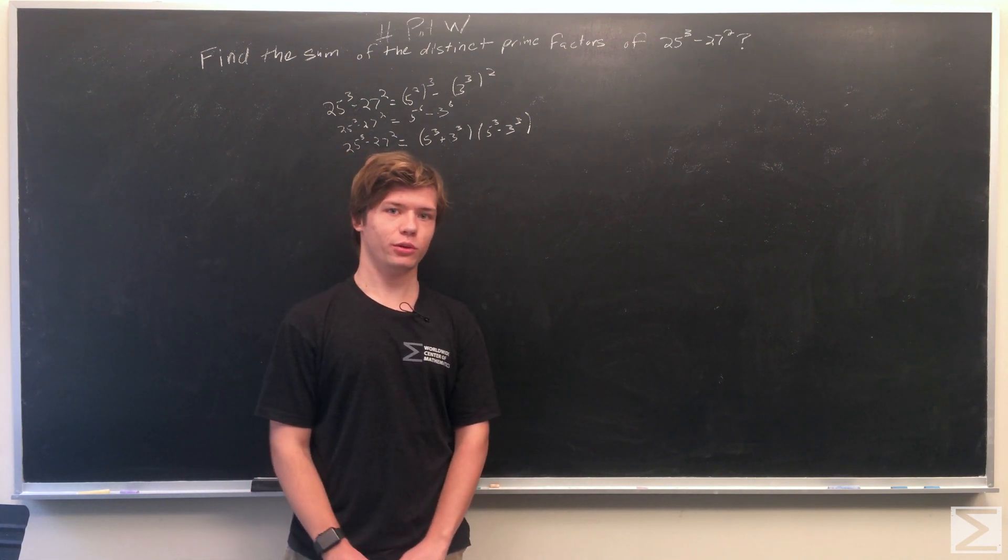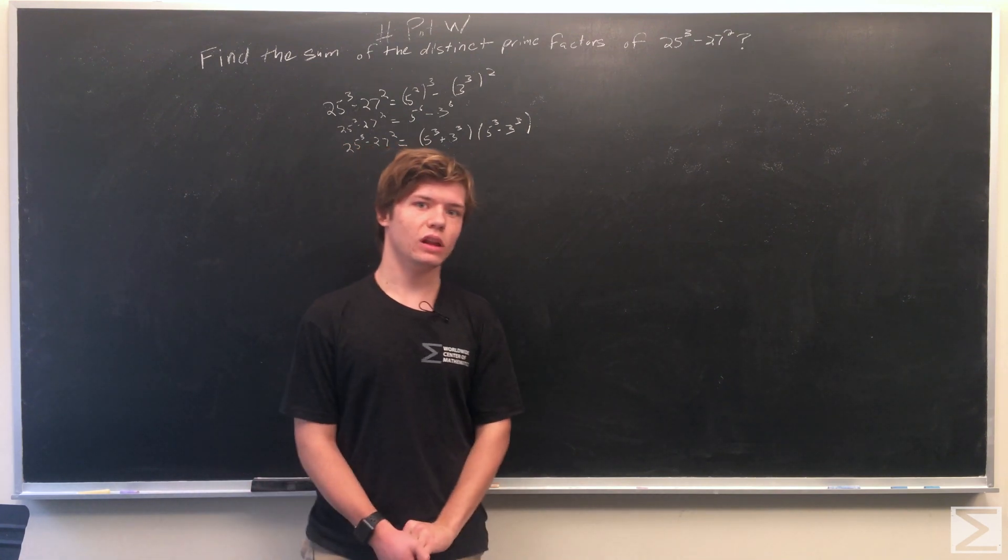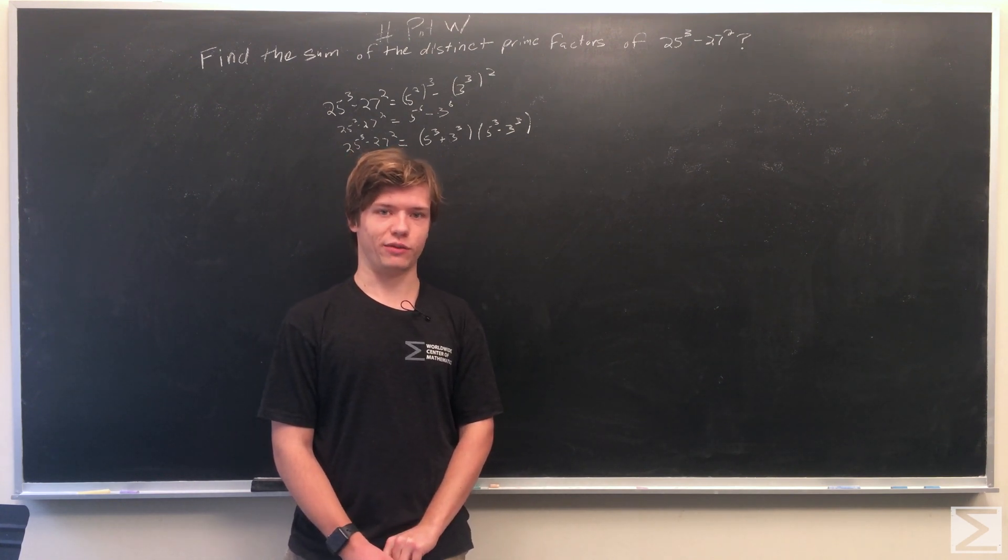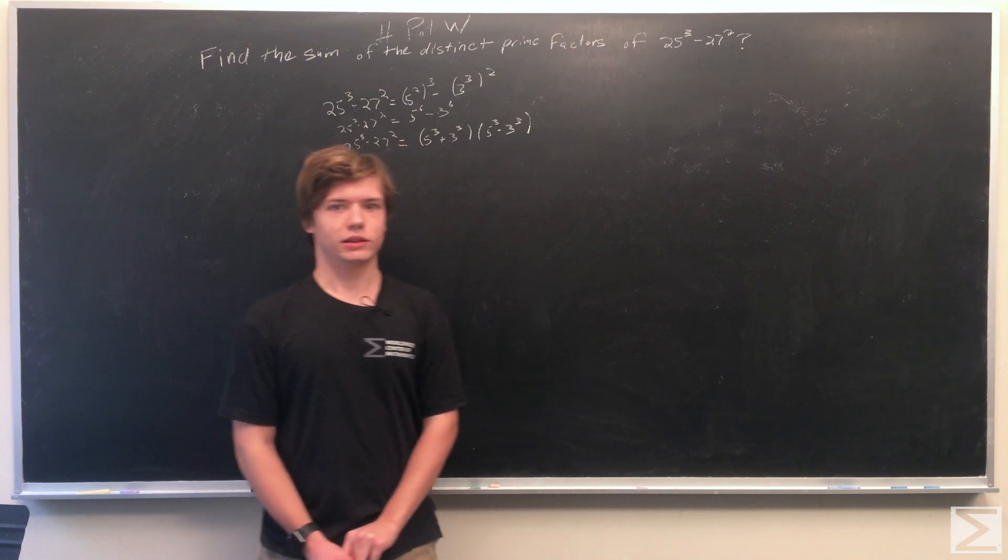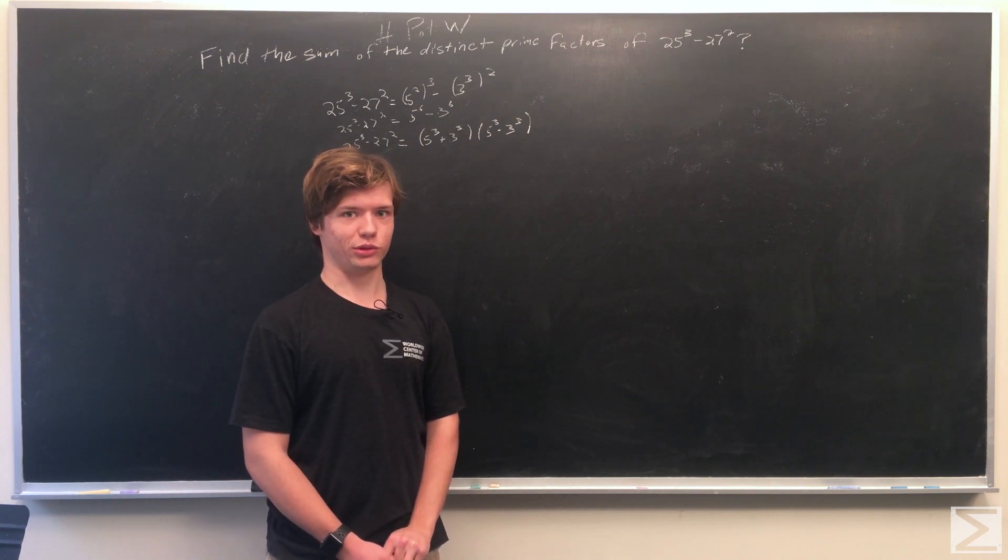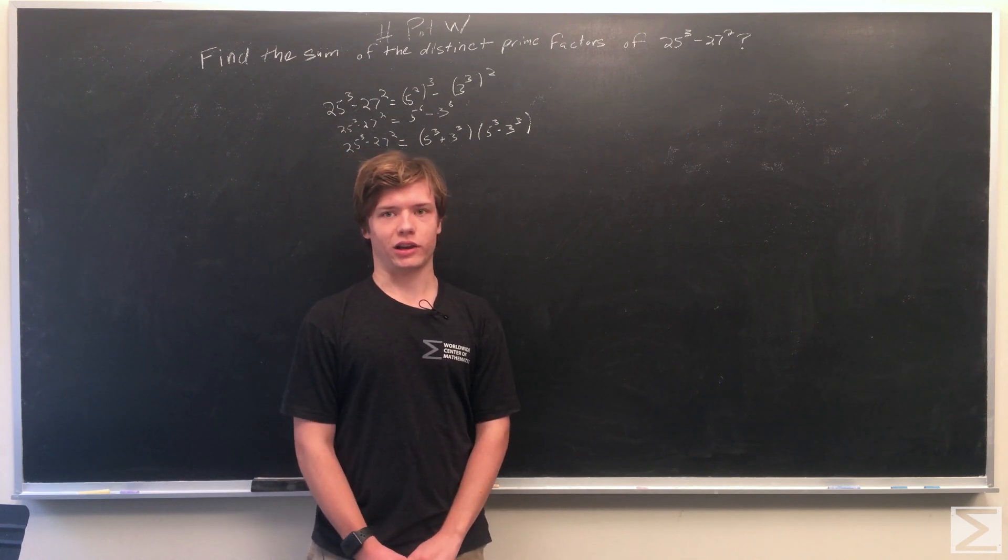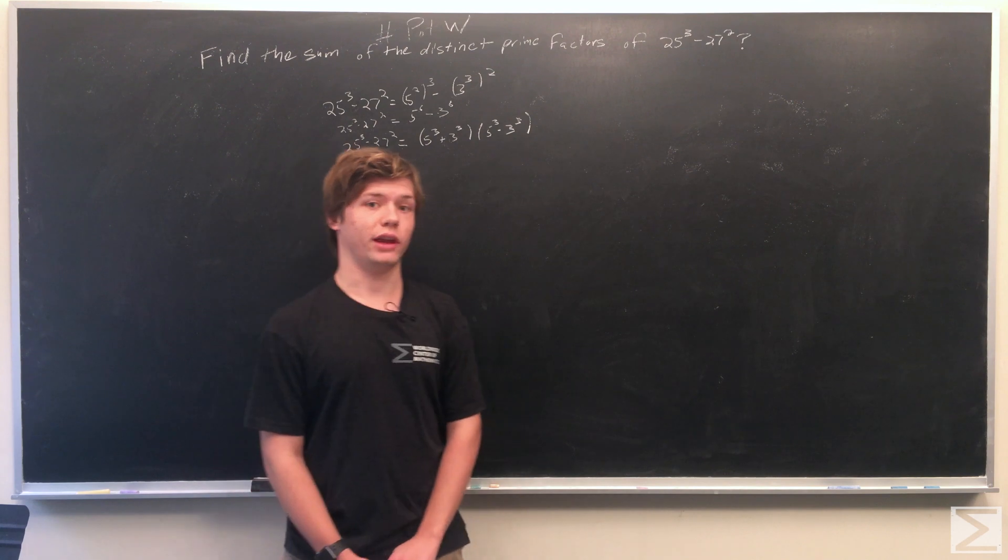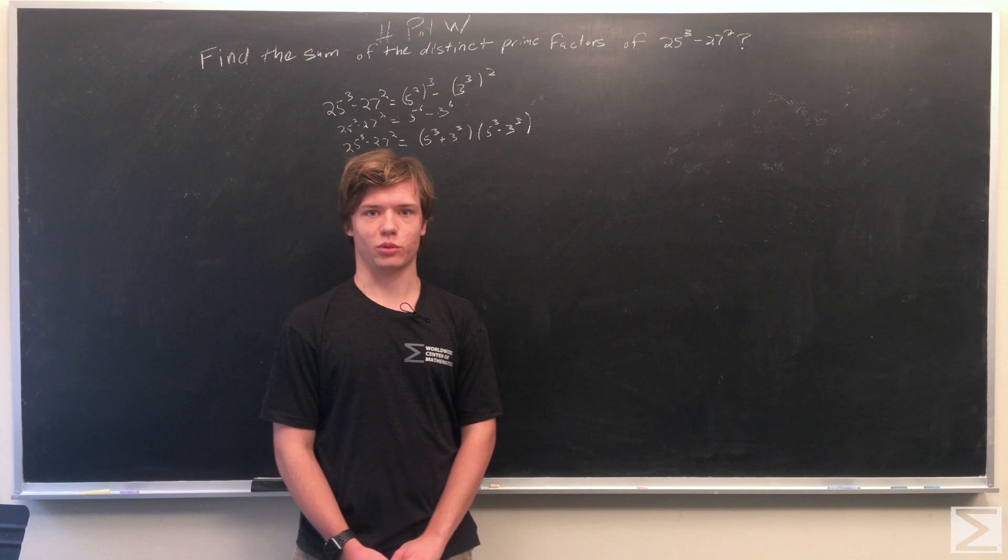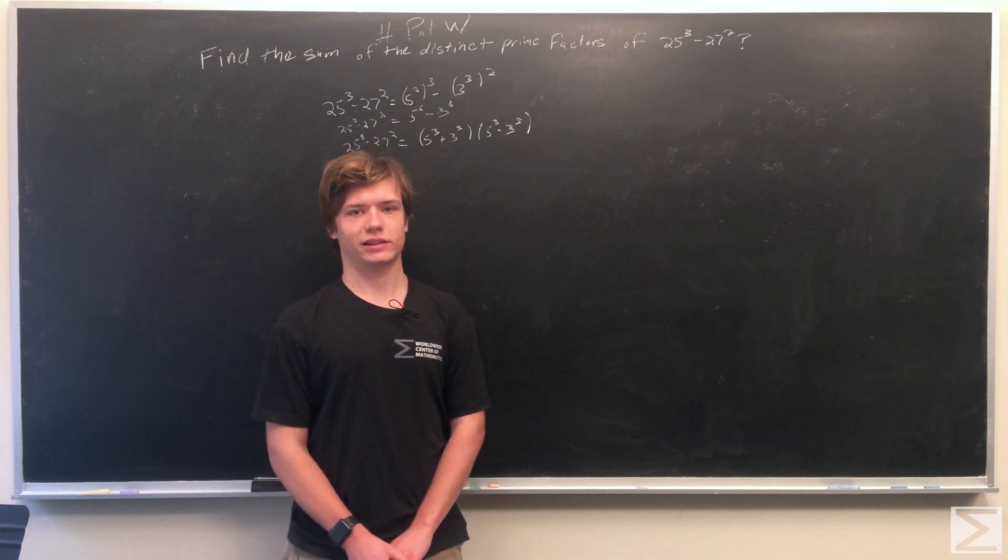So now what we have to do is we have the sum of cubes and the difference of cubes. So what we do now is we plug in the formulas for sum of cubes and difference of cubes. For x cubed plus y cubed is equal to x plus y times x squared minus xy plus y squared. And for difference of cubes, we have x minus y times x squared plus xy plus y squared. So we'll write those down with 5 equal to x and 3 equal to y.